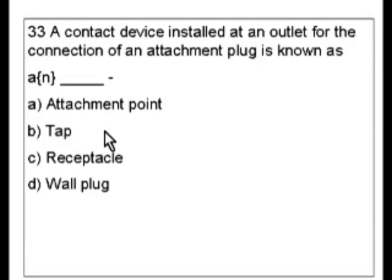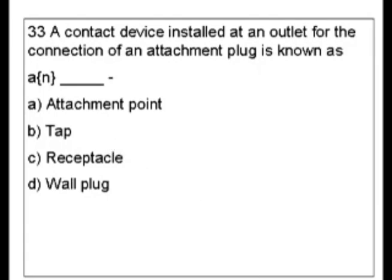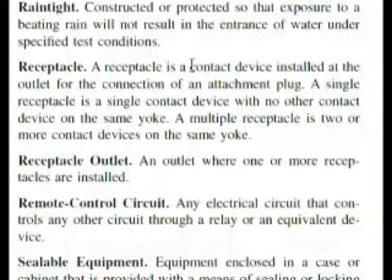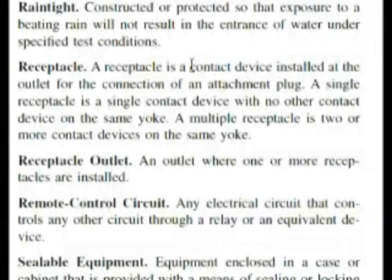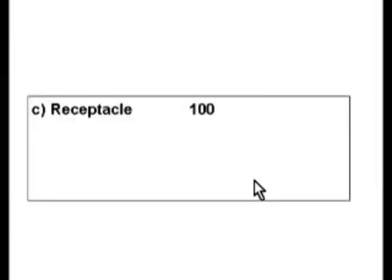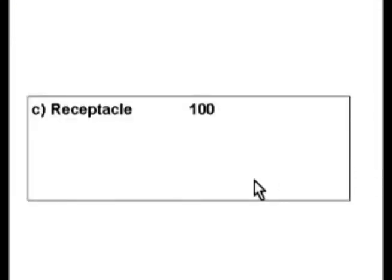Fortunately for us, this is in Article 100, and we can see we're at receptacle. A receptacle is — and our question was — a contact device installed at the outlet for the connection of an attachment plug. So, receptacle is our answer. Receptacle is choice C.